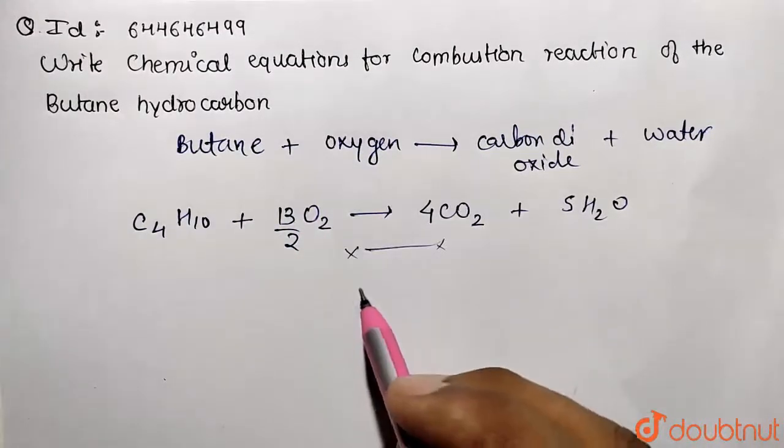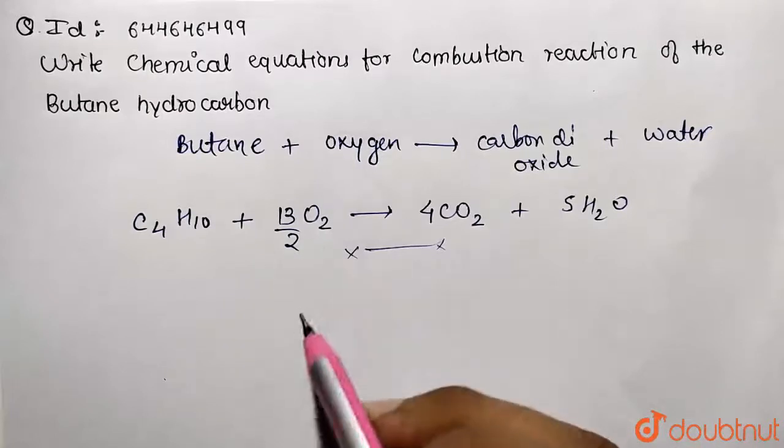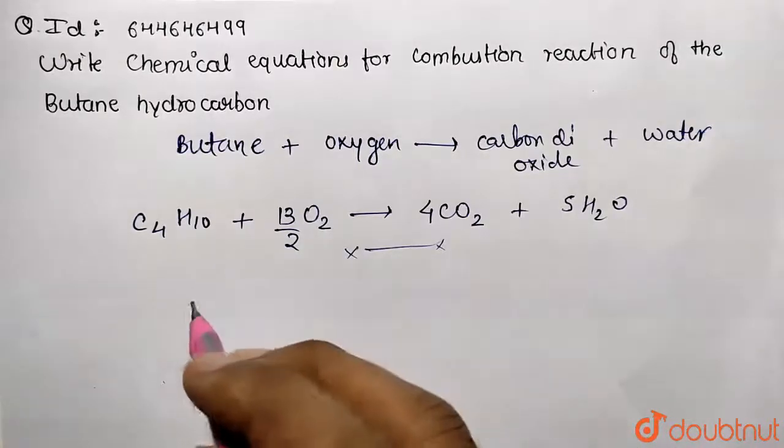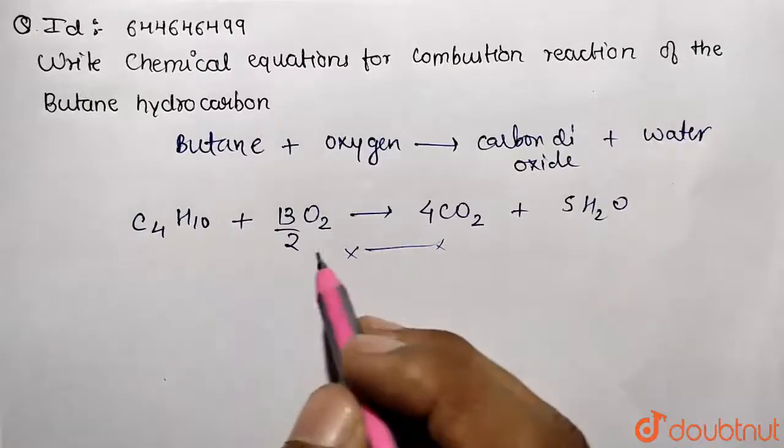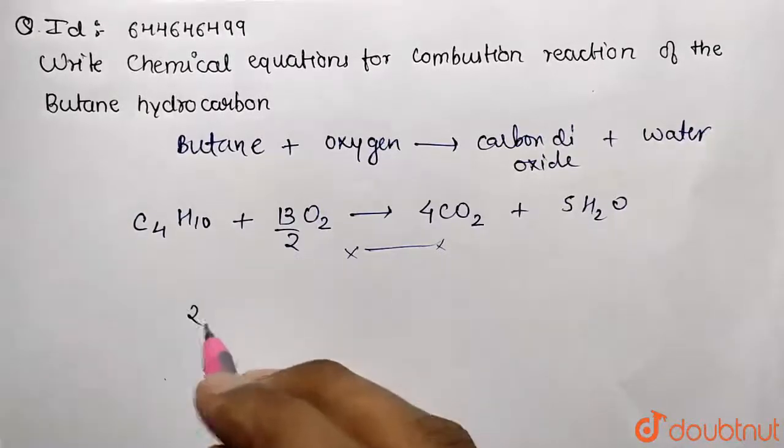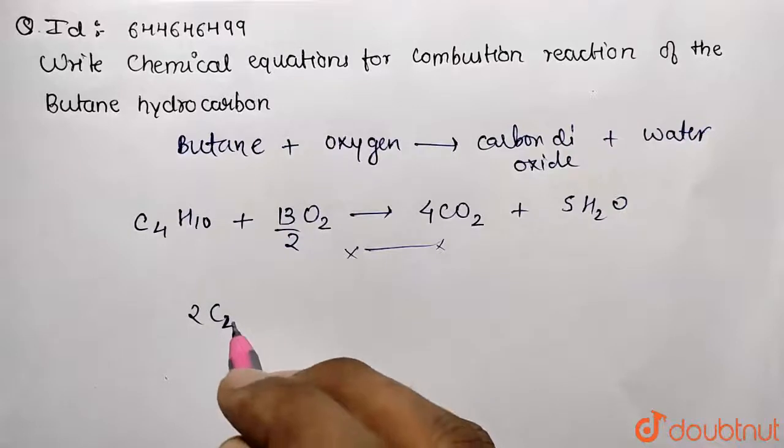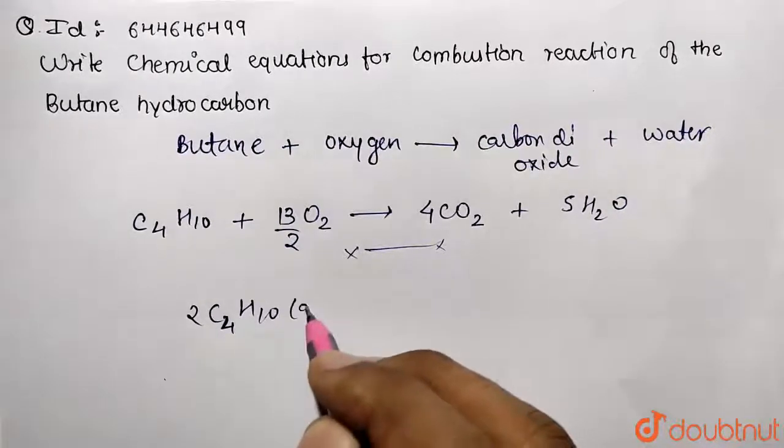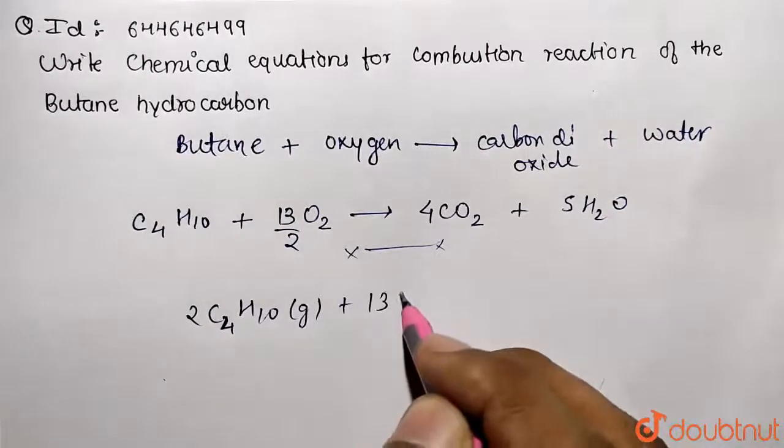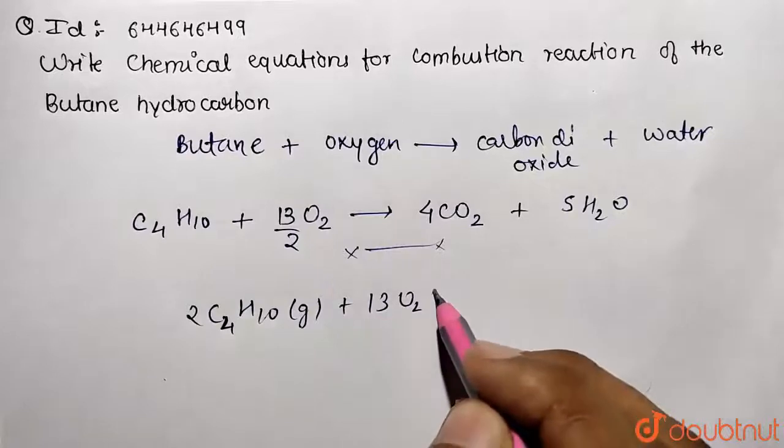So this is going to be the net equation, but sometimes you find that it's written in more simpler form. What you are going to get is multiplication of two factor in every equation because this will be removed out. So it's going to be twice of C4H10, and this is in the gaseous form, and you are going to get 13 O2 because you multiply over here with two.